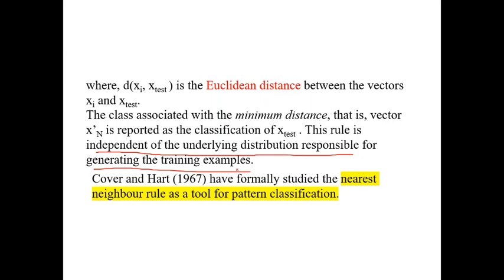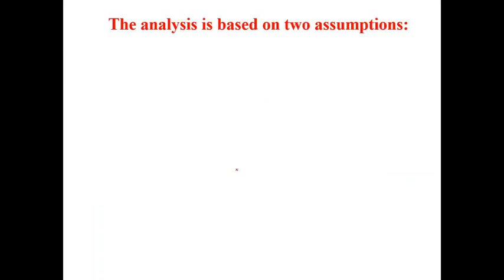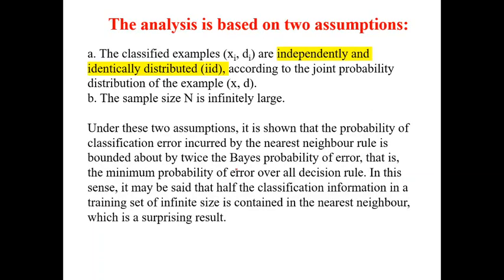The nearest neighborhood rule, nearest neighbor rule is a tool for pattern classification. It is derived by Coverhart in 1967. The analysis is based upon two assumptions. First assumption is the classifier example XI, DI. XI is the input vector and DI is the destination scalar. Are independently and identically distributed according to the joint probability distribution rule. The sample size N is infinitely, infinitely large. It gives more accuracy.